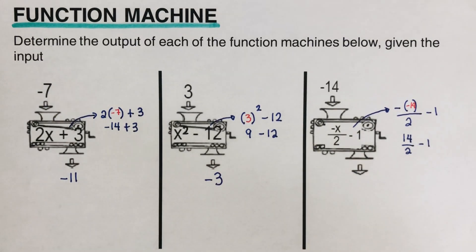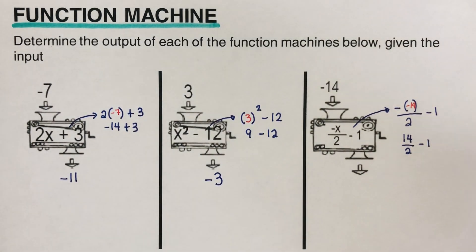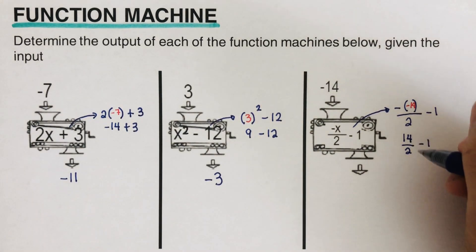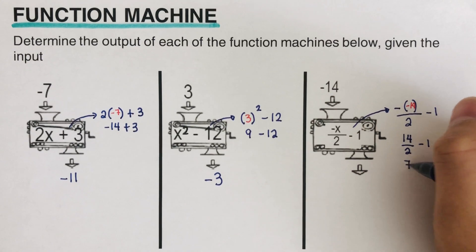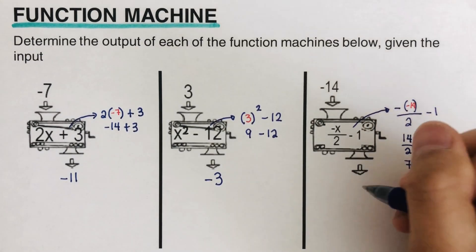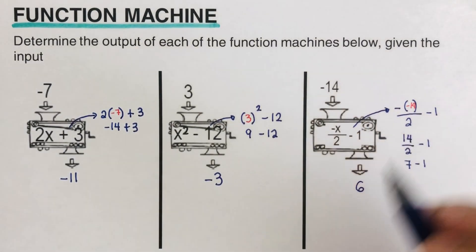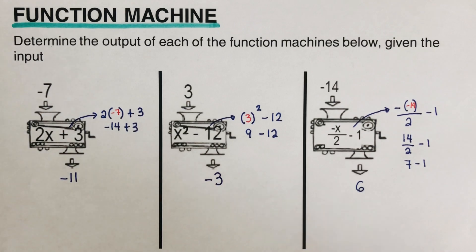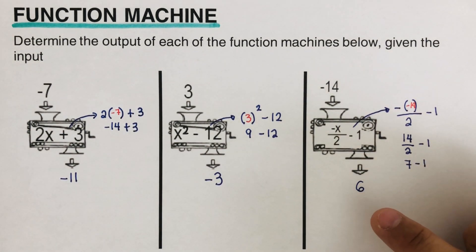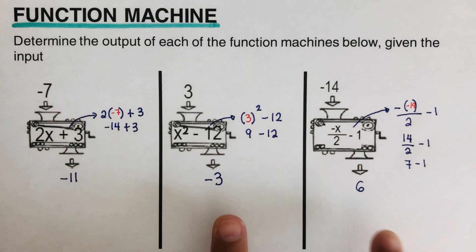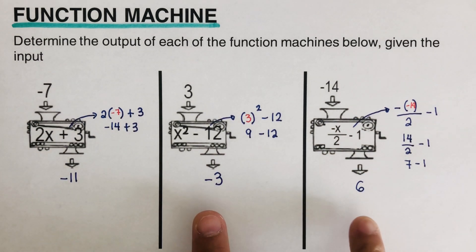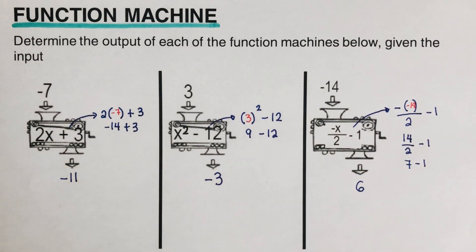This is where changing the variable into a parenthesis plays a role in getting the correct answer. We divide: 14 divided by 2 is 7, and 7 minus 1 is 6. So the output for this machine is 6, and it is a function because we have a unique single output. Did you get negative 3 and 6? Good.